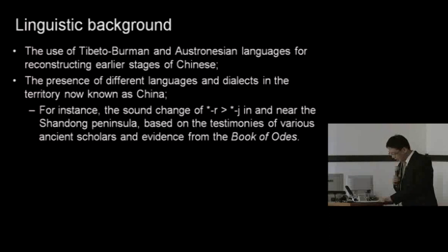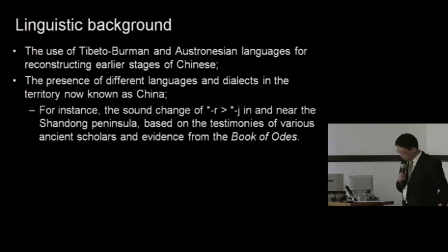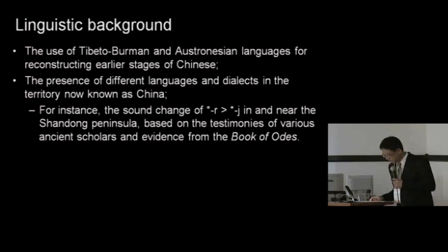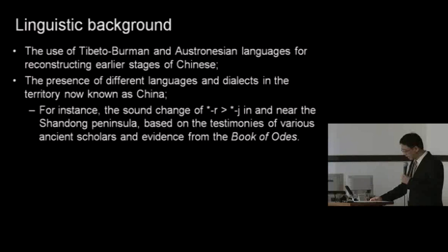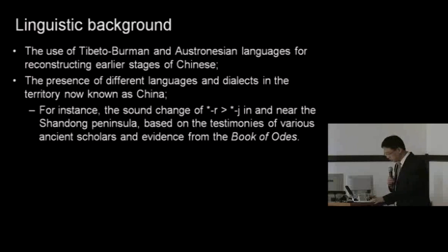An example of a rather clear distinction is that on the basis of a reconstruction of the phonology of ancient China, with testimonies by several Han dynasty scholars — Zhengzong, Zhengxuan, Gaoyou, Ruchun, Liuxi — we now know that in the region of the Shandong Peninsula, there was a sound change of the R coda to the J coda. And this is corroborated by evidence from the rhymes of the Shijing, or the Book of Odes, in the section called Chen Feng, with the state of Chen just being west of the Shandong Peninsula.